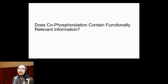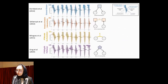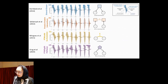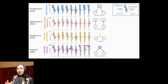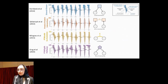The first question we asked was: does this co-phosphorylation that we are defining contain any functional or relevant information? We use different biological knowledge about pairwise associations between phosphosites. For example, if two sites share a kinase — if the same kinase phosphorylates both sites — can we say that these two sites are more likely to be co-phosphorylated?